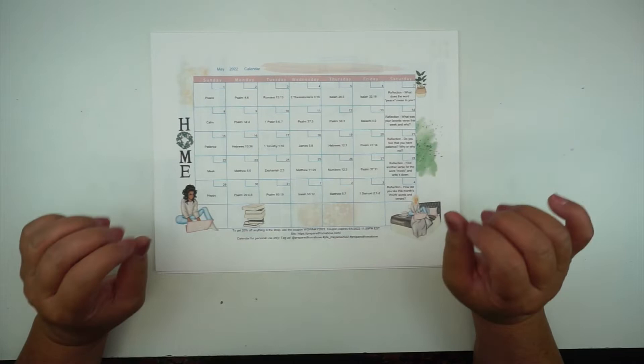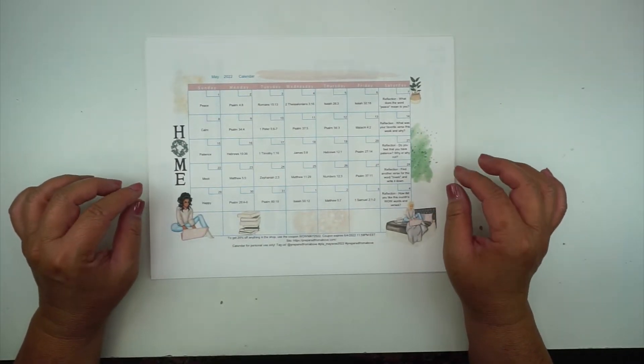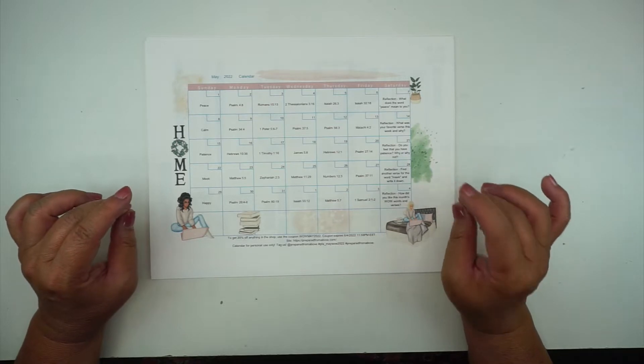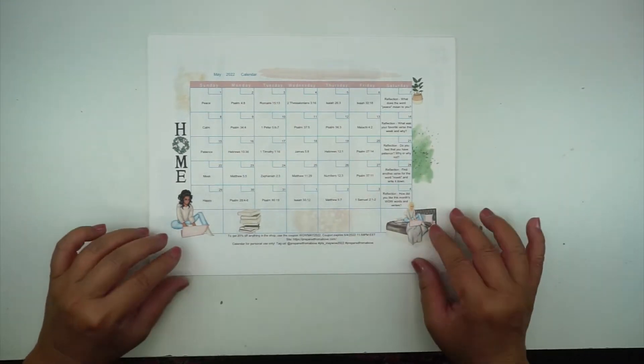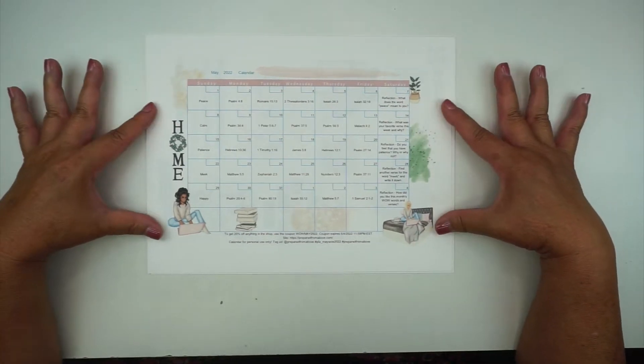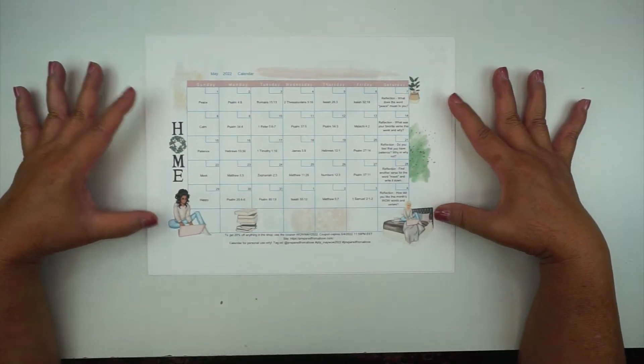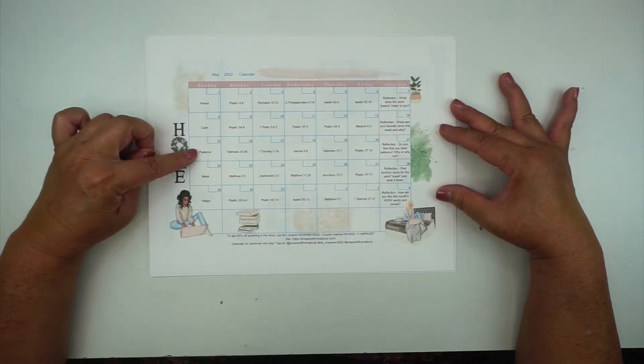Today I'm going to be doing a quick overview of the May WOW Kit, that would be May Word of the Week Kit by Prepared from Above. This month, this is what your calendar will look like and this is a freebie on the website. We will be going over the words peace, calm, patience, meek, and happy.